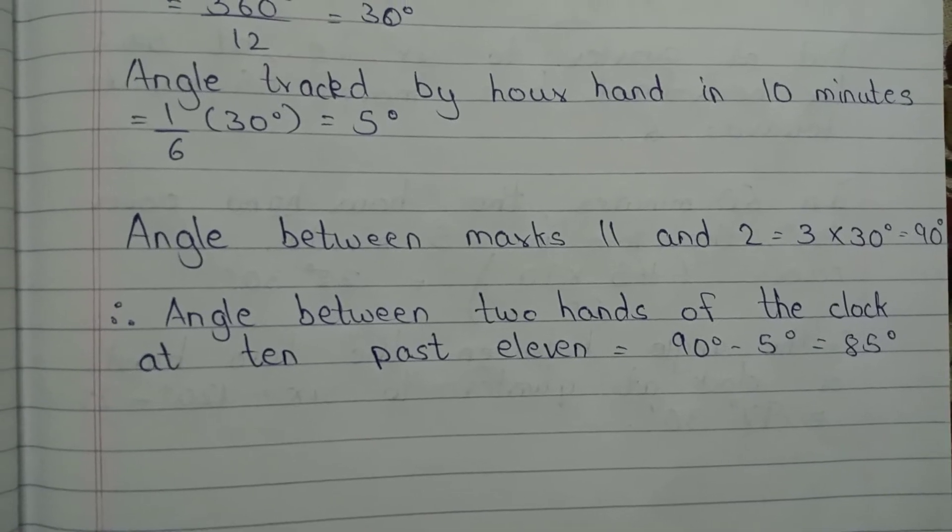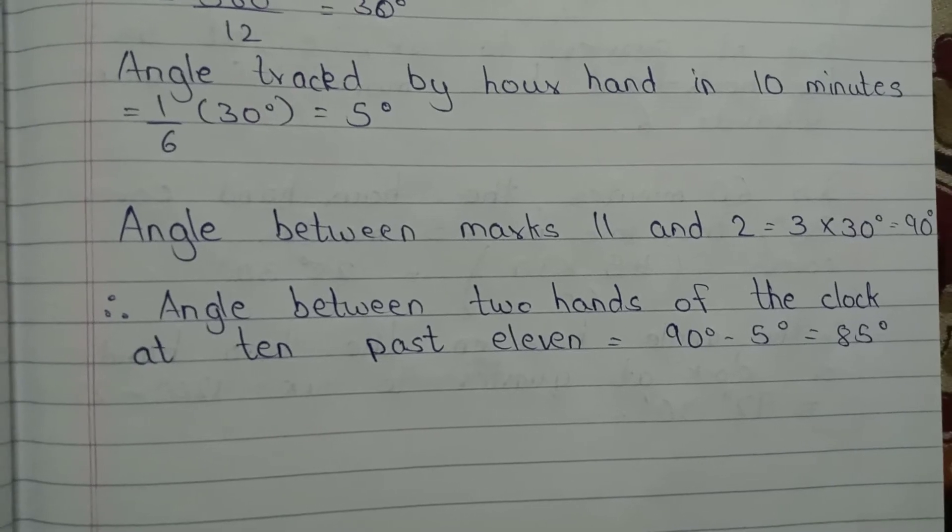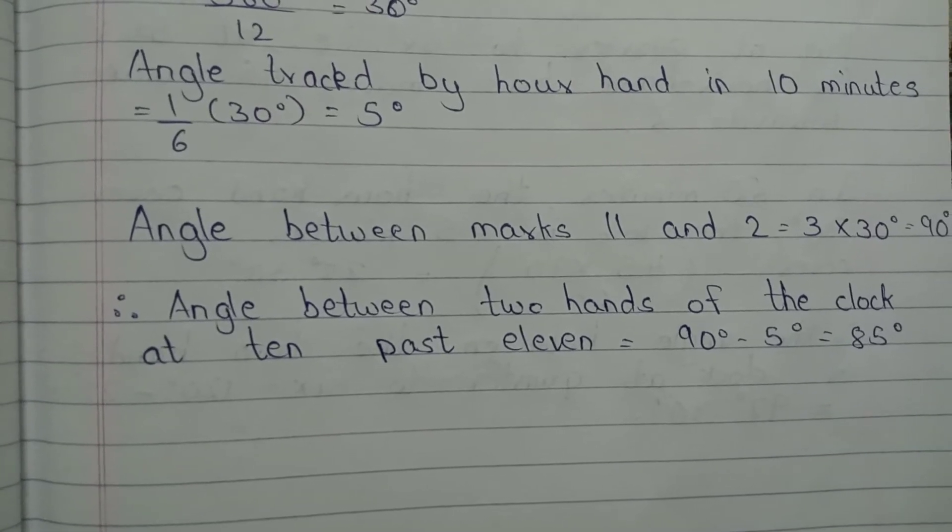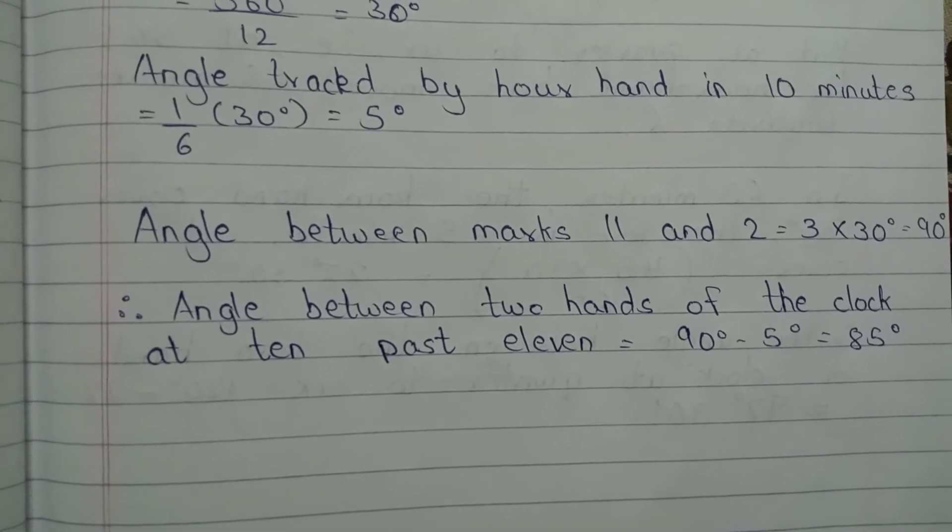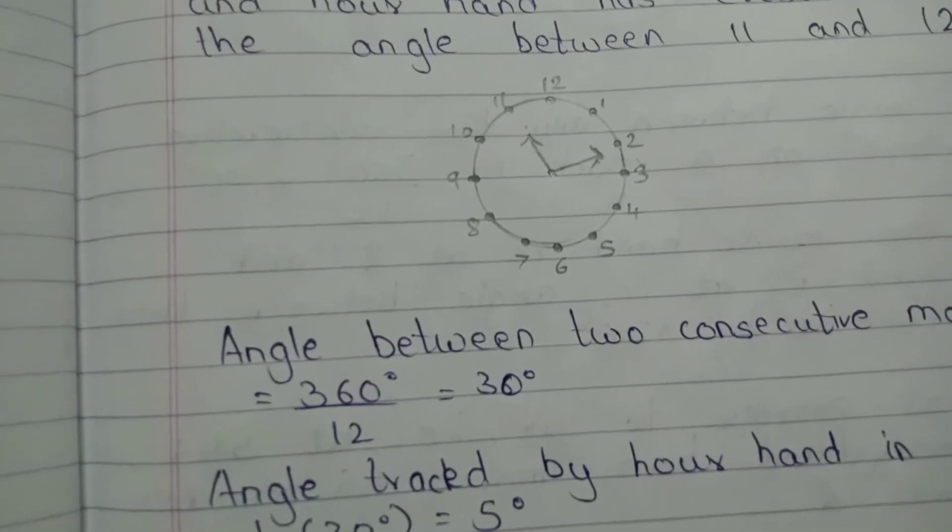So angle between marks 11 and 2, which is equal to 3 into 30 degrees, which is equal to 90 degrees. So 90 degrees minus 5. Do you know why we are doing 90 degrees minus 5?